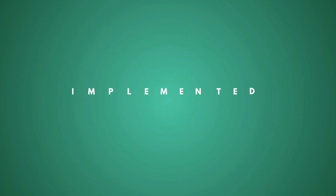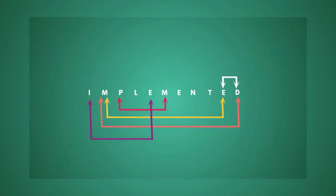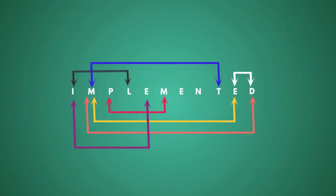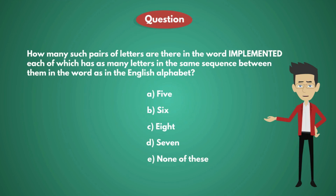Like this, there are some other pairs also: E-I, M-P, E-M, D-M, and D-E. The total pairs are shown in the diagram, giving us seven pairs in total. So the answer is option D, seven.